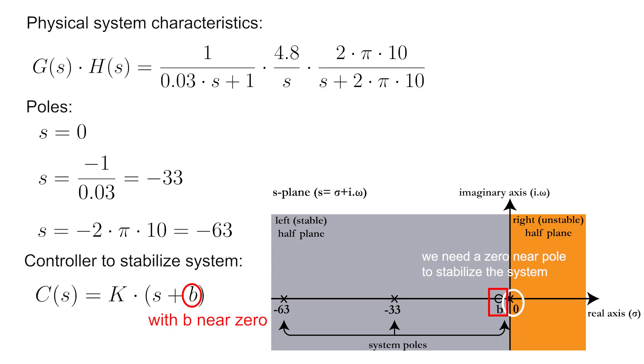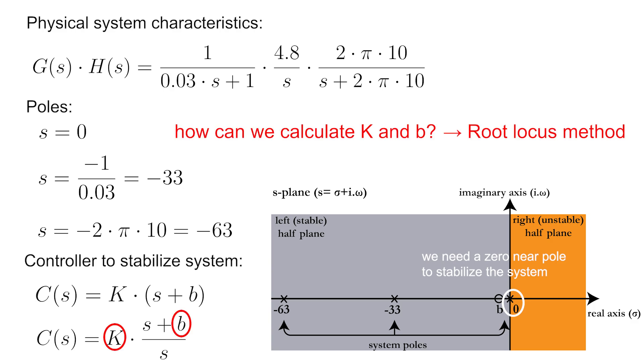In order to make sure that we do not get a steady-state error in the response, we will use a controller to put another pole at 0, with the final equation for the controller displayed on the screen. Now the parameters K and B will be calculated with the so-called root-locus method.